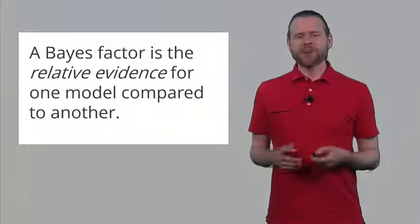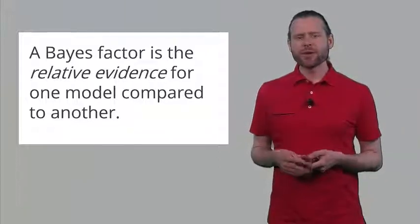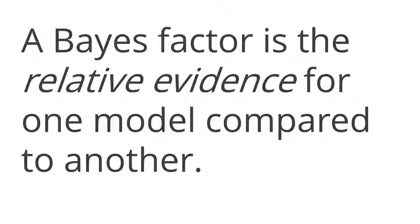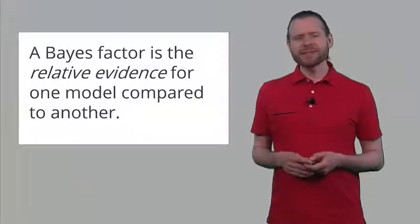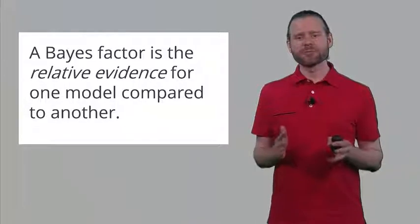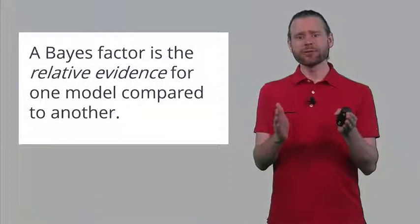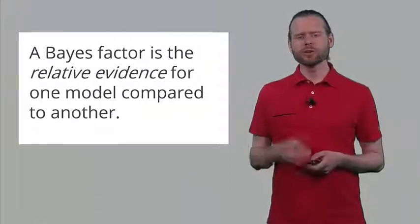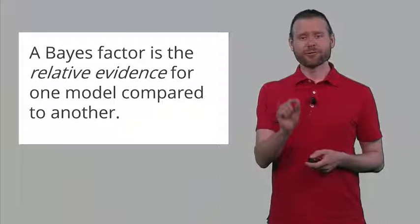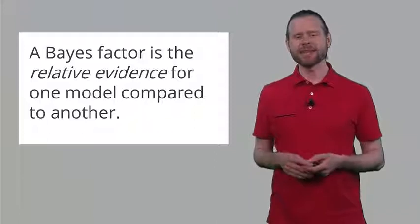Using the prior distribution and the posterior distribution, we can calculate something known as a Bayes factor. The Bayes factor is the relative evidence for one model compared to another model. Compare this to likelihood ratios: in a likelihood ratio we only have one distribution and compare two different values of theta on the likelihood function. But here we use the likelihood from the prior distribution and compare it to the likelihood of the posterior distribution.